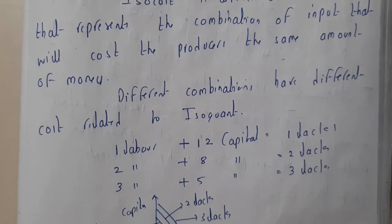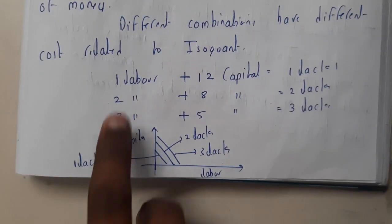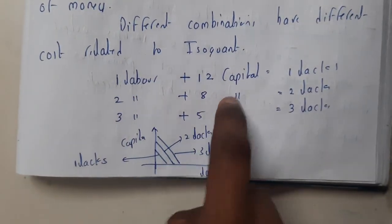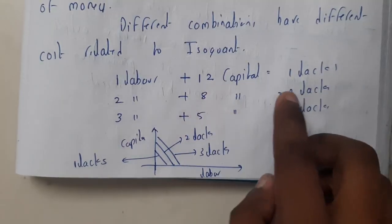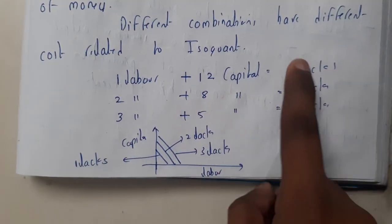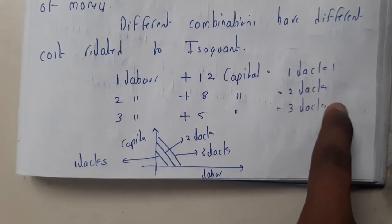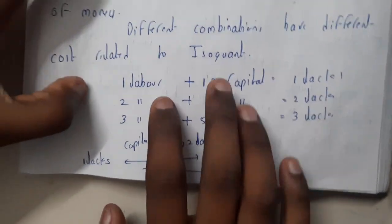Here if you use one labor and if you use 12,000 capital, you gonna get 1 lakh like that. See here you are getting different different costs. This is about isoquant and isocost. I hope everyone got a small idea on this.